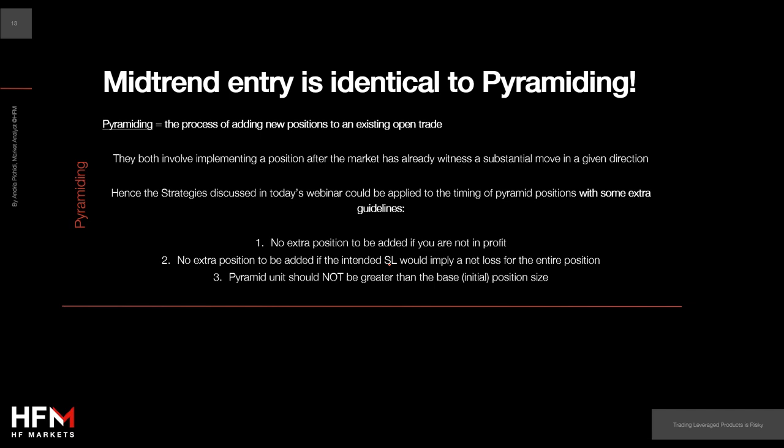Just a few guidelines for pyramiding. First: you should not add to any existing position unless the last unit placed shows a profit — add only when you are already in profit. Second: you should not add to an existing position if the intended stop loss would imply a net loss for the entire position. Third: pyramid units should be no greater than the base — the initial position size. If your initial position was 0.5 lots, your extra positions shouldn't be greater than 0.5.